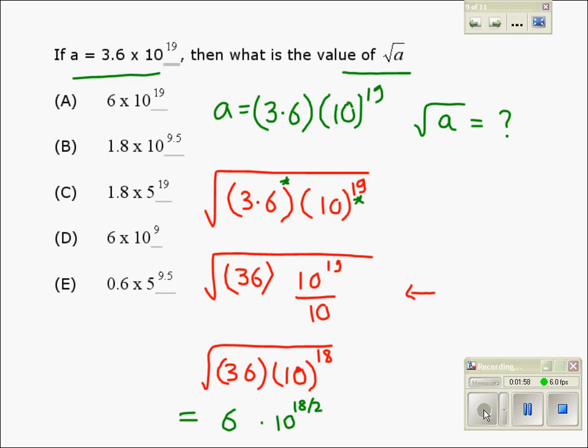This we have learnt in the exponent, and therefore we get 6 into 10 to the power 9. That should be the right answer - option D is the best option.